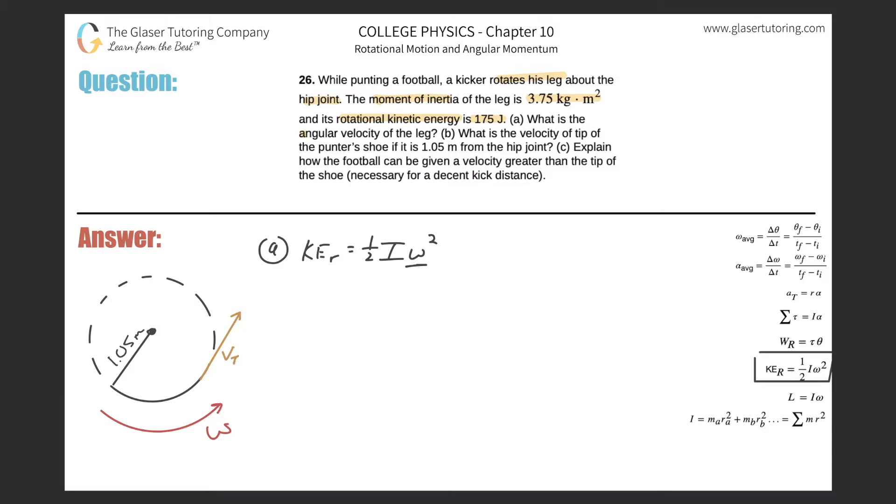If I need to find this angular velocity, we just have to do some algebra. Multiply this side by two to get rid of the half, multiply that side by two, and then divide out the I from both sides. You would be left with omega squared equals 2 KE_r over I.